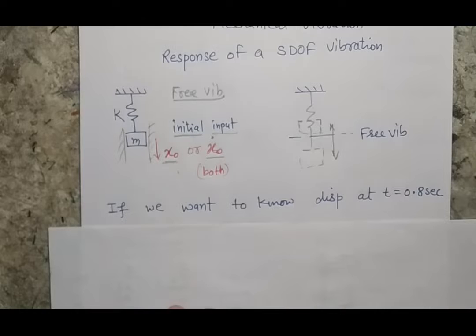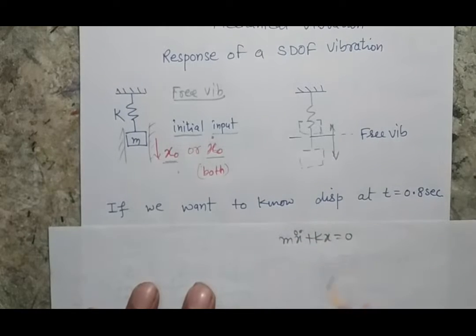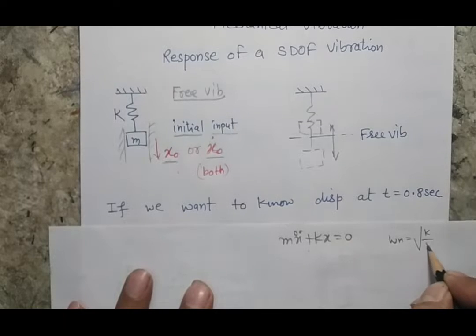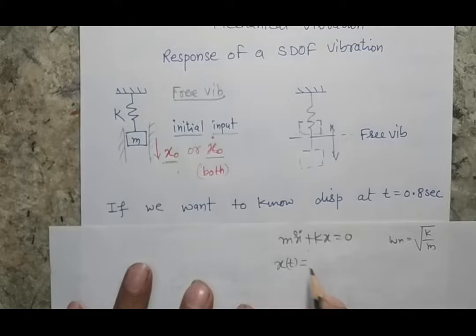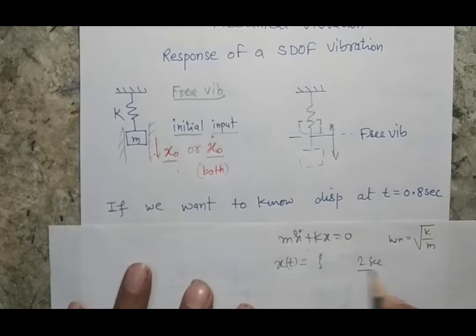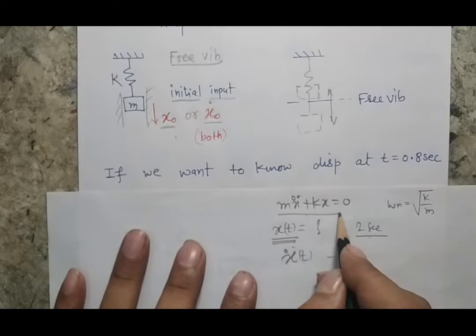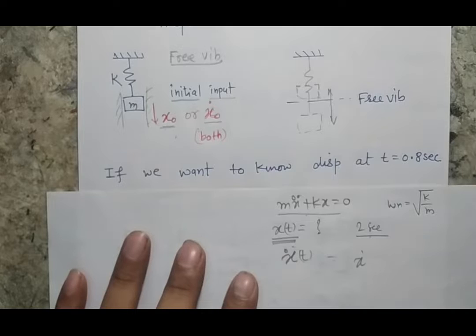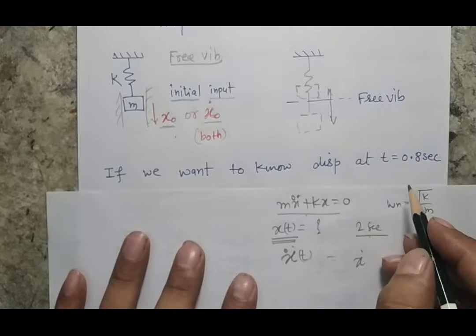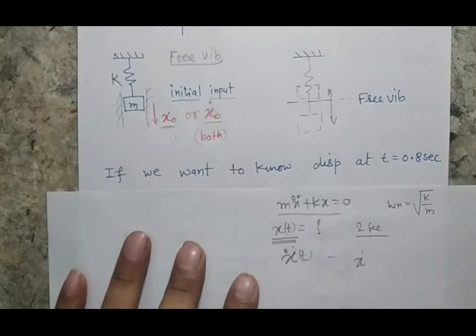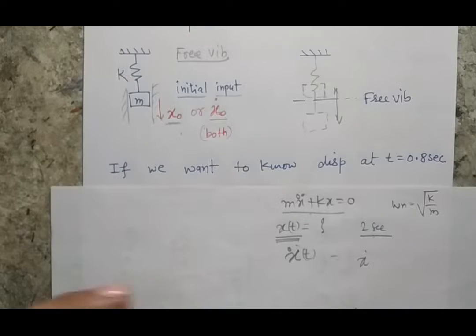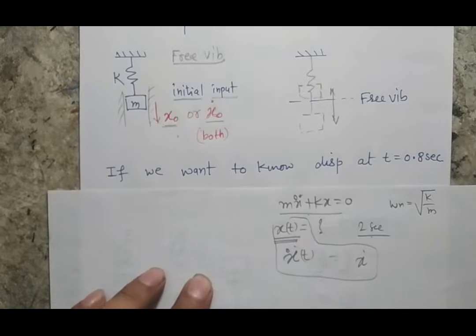In our previous lecture we derived the equation of motion: mẍ + kx = 0. Using this expression we can get the natural frequency ωₙ = √(k/m). But if you ask me to find the displacement x as a function of time after two seconds, or the velocity or acceleration after two seconds, I cannot yet do that. I need to solve this ordinary differential equation to get all three quantities as functions of time.